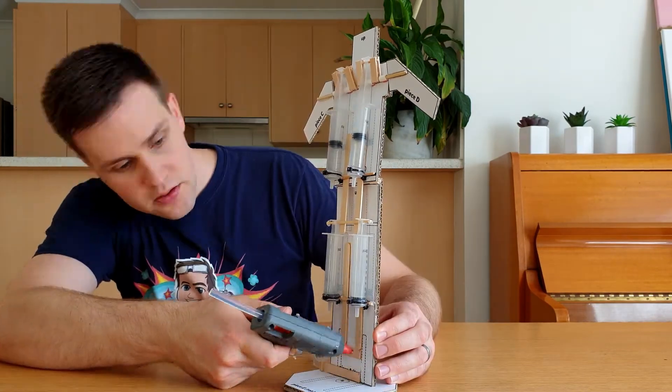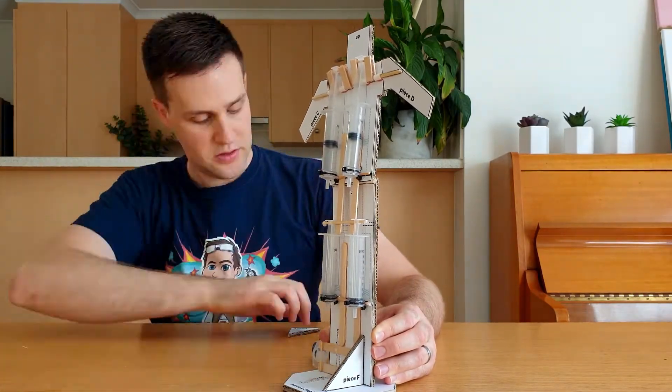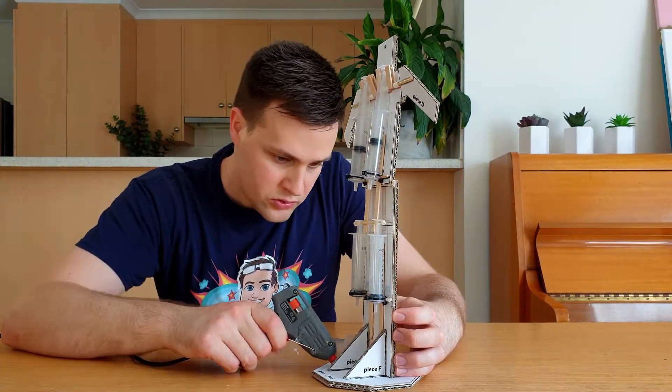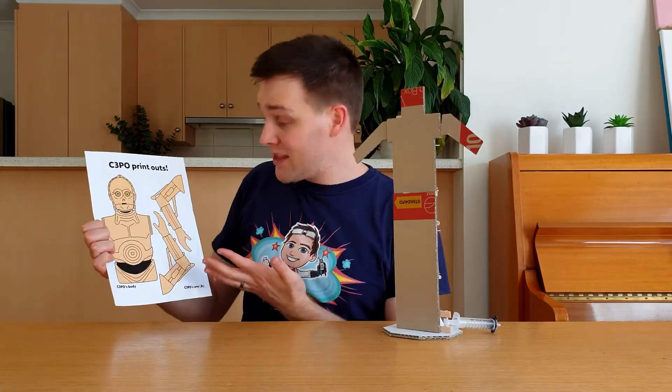Add some hot glue to these rectangles and then attach one piece F. Repeat this on the other side. For extra strength, add a line of hot glue along these edges. At this point, you can attach your drawing of C-3PO to the front.